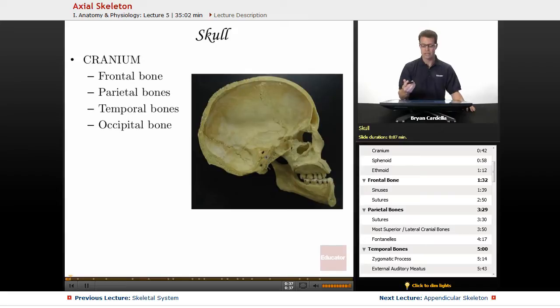We're going to start with the skull at the most superior portion of the axial skeleton. The cranium is all of this business right here, and that includes the frontal bone, the parietal bones, the temporal bones, the occipital bone.